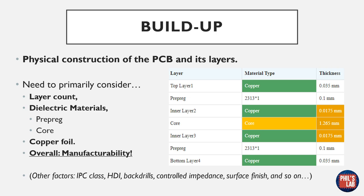We need to consider primarily the layer count — this could be two, four, six, or many more layers — the dielectric materials, which are different prepregs and cores, and we also have to choose copper foils with different thicknesses depending on whether they're outer or inner layers. As always with PCB design, we want to consider manufacturability and communication with your PCB manufacturer. Other factors include IPC class, High Density Interconnect (HDI), via aspect ratios, controlled impedance, surface finishes, and so on.